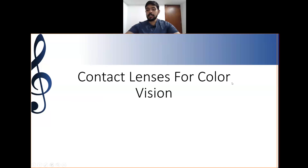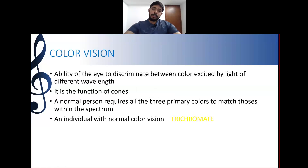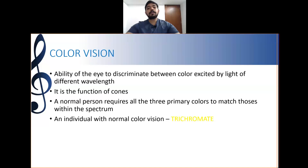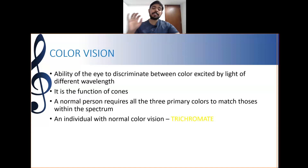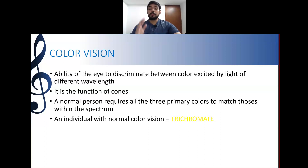Color vision is the ability of the eye to discriminate between colors excited by light of different wavelengths — whether individual wavelengths are absorbed or reflected. Color vision is a function of cone photoreceptors. A normal person requires all three primary colors to match those within the spectrum: erythrolabe, cyanolabe, and chlorolabe — these three pigments are present in the cone cells.